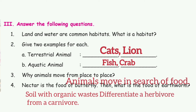Second question: give two examples for each. A) Terrestrial animals — the answers are cat and lion. B) Aquatic animals — the answers are fish and crab.